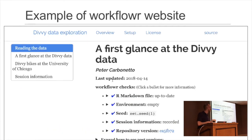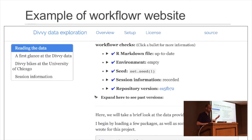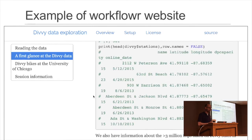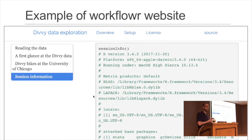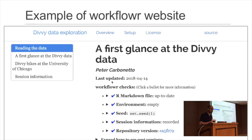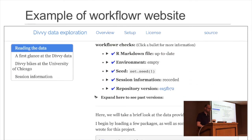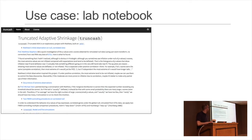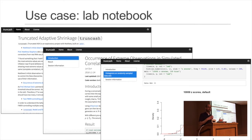Here's an example of a WorkflowR website created by my colleague Peter Carbonetto — it's an analysis of Divvy Data, the bike sharing program in Chicago. You can see all his code right next to his plots, session information at the end, a reproducibility report at the top with links to past versions. Another use case is as a lab notebook for a single researcher — for example Lei Sun, a PhD student with my advisor Matthew Stevens, uses it as a true computational lab notebook, with hyperlinks to all his different analyses and his thoughts recorded as he meets with his advisor.